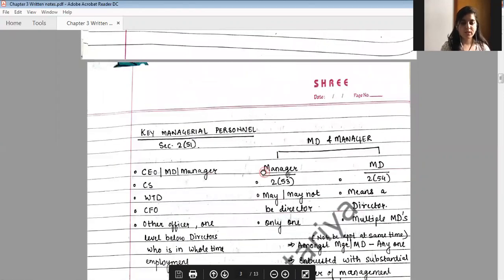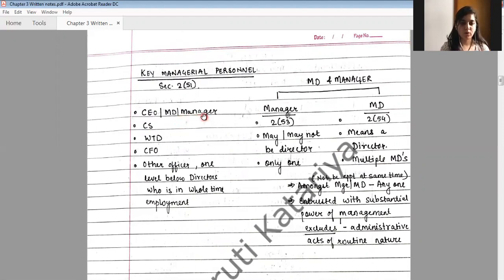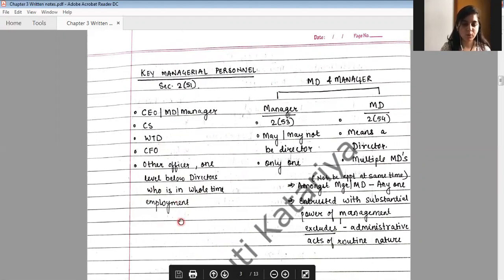First, we'll see what is a key managerial personnel. Section 2 subsection 51 defines key managerial personnel. A key managerial person is a CEO or a managing director or a manager, a company secretary, a whole time director, a CFO, or any other officer one level below directors who is in whole time employment.